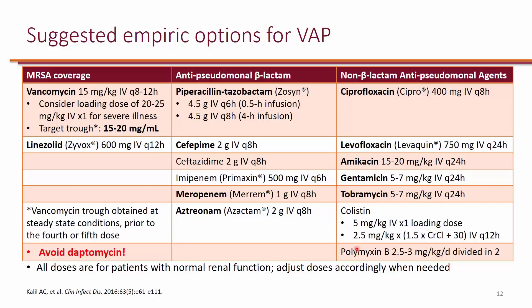Polymyxins like colistin and polymyxin B are usually reserved as last-line agents. For example, if someone received IV antibiotics in the last 90 days — say ceftriaxone two weeks ago — and now has ventilator-associated pneumonia, we can choose an MRSA-active agent like vancomycin, plus one beta-lactam active against Pseudomonas such as piperacillin-tazobactam, plus a second agent like ciprofloxacin. The patient will end up receiving three agents: ciprofloxacin plus piperacillin-tazobactam plus vancomycin.